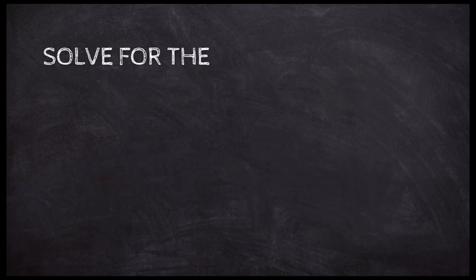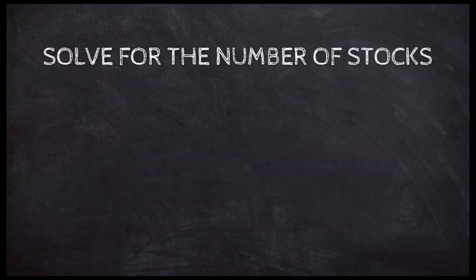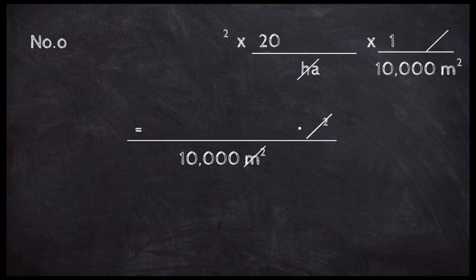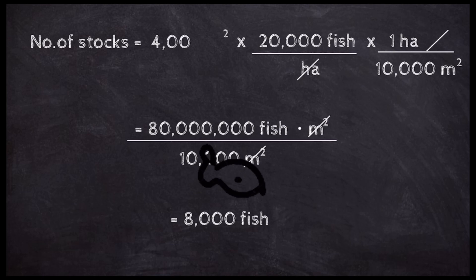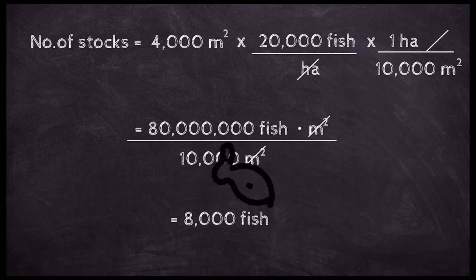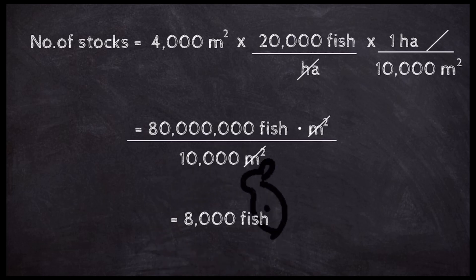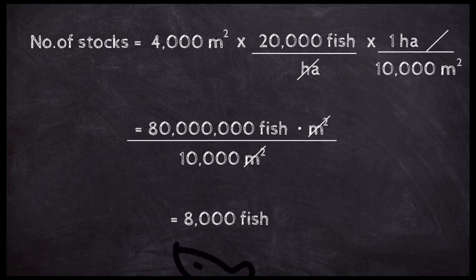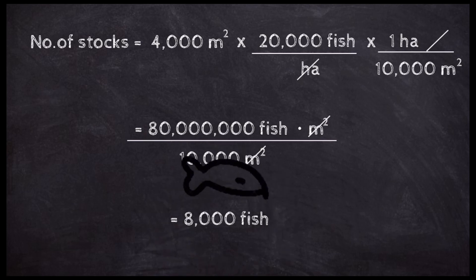Second, solve the number of stocks using the formula. The number of stocks is equal to 4,000 square meters times 20,000 fish per hectare times 1 hectare over 10,000 square meters. The total is 80,000,000 fish divided by 10,000 square meters, which equals 8,000 fish needed to stock in the pond.